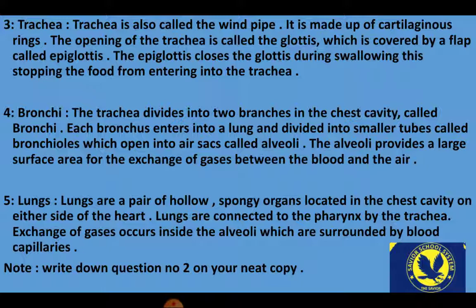The trachea, also called the windpipe, is made up of cartilaginous rings. The opening is called the glottis, covered by a flap called the epiglottis, which closes during swallowing to stop food from entering the trachea. The trachea divides into two bronchi in the chest cavity. Each bronchus enters the lungs and divides into smaller bronchioles opening into air sacs called alveoli, which provide a large surface area for gas exchange between blood and air. Lungs are connected to the pharynx and trachea.